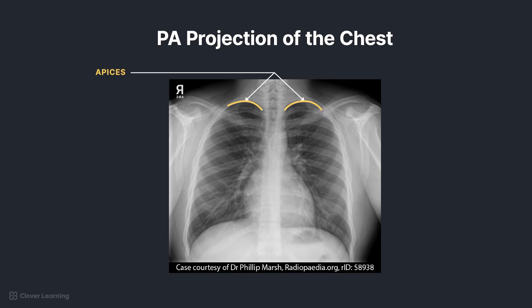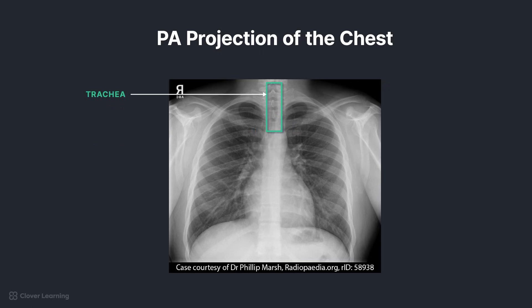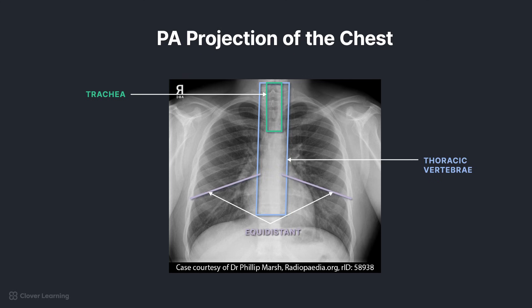Both lungs from apices to costophrenic angles should be demonstrated. A minimum of 10 posterior ribs above the diaphragm should be visualized with sufficient inspiration. Both sternoclavicular joints should be the same distance from the center of the spine. The trachea should be visible in the midline, and the distance from the lateral rib margins to the vertebral column should be the same on both sides from upper to lower ribs to ensure no rotation.